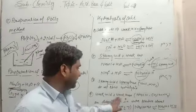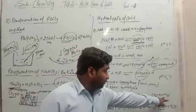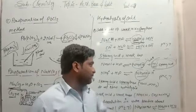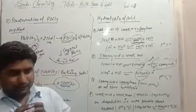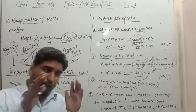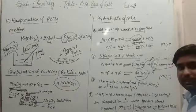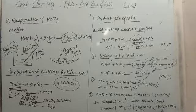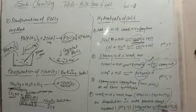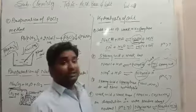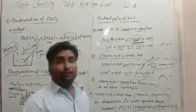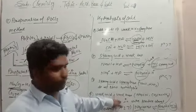Now the fourth type is salt formed from a weak acid and weak base — examples are ammonium acetate and ammonium cyanide (NH₄CN). When ammonium cyanide undergoes hydrolysis, it gets converted into ammonium hydroxide and HCN. Ammonium hydroxide is a weak base and HCN is a weak acid. Since both are weak, they have almost the same pH value, and the pH will fluctuate around 7 — so the solution is approximately neutral.